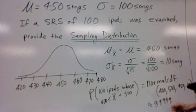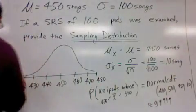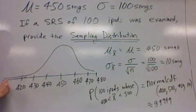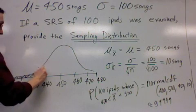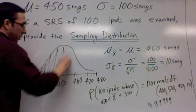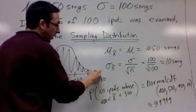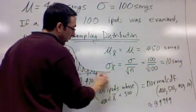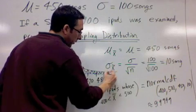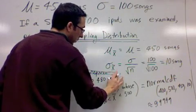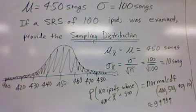A whole bunch of 9's. Makes sense too if you take a look at the actual picture. We're talking about from 400, which is way down here, all the way up to 500. It basically includes the entire normal curve except for a little section right here.